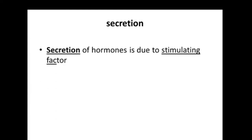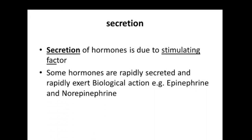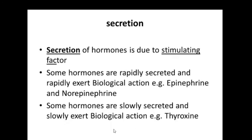Secretion of hormones is due to a stimulating factor. Some hormones are rapidly secreted, like epinephrine and norepinephrine, while others are slowly secreted and they slowly exert biological action, such as thyroxine, a hormone produced by the thyroid gland.